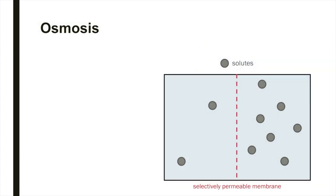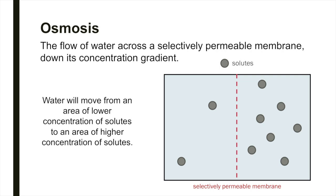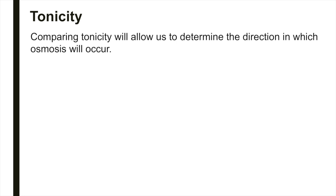The flow of water across a selectively permeable membrane is called osmosis. During osmosis, water moves down its concentration gradient. The concentration of water is inversely related to the concentration of solutes, or dissolved substances, in a solution. In other words, water will move from an area of lower concentration of solutes to an area of higher concentration of solutes. Tonicity refers to the relative solute concentrations of two environments separated by a semipermeable membrane. By comparing the tonicity of two solutions, you can determine the direction in which osmosis will occur. Keep in mind that water can cross the plasma membrane of the cell, while many solutes, such as sodium chloride, are not able to cross.